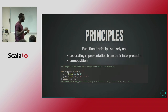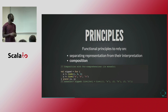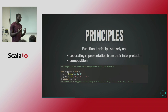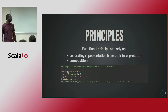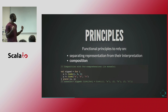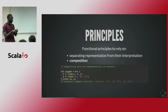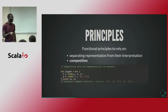The second principle we want to rely on is composition. Composition is something we are used to in the Scala ecosystem, and we are used to composing with for comprehension. This is the way we are doing monadic composition. Here's a very simple example: you have two lists, a list of integers and a list of strings. What you want to do is pair the elements together. You iterate on the two lists and put the elements in a tuple.